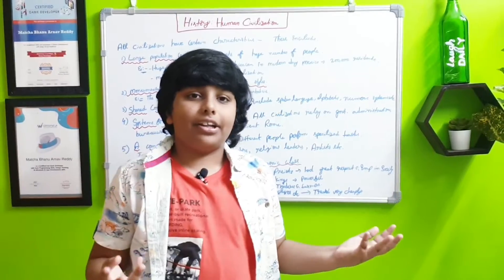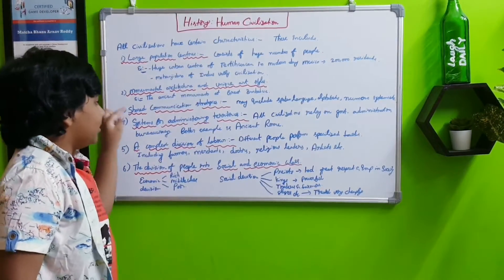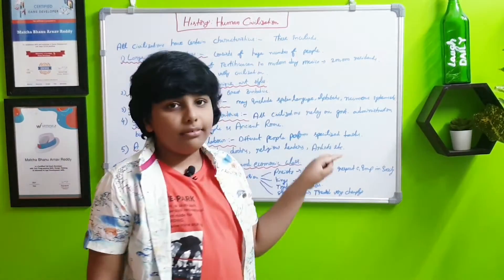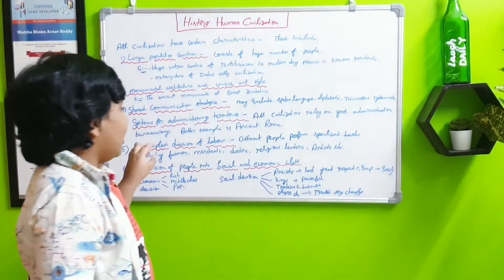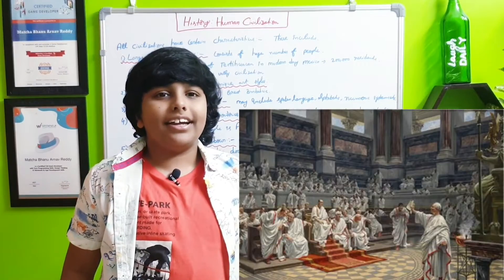Next, systems for administrating territories. All civilizations rely on the government, government administrative bureaucracy. Better example is ancient Rome. Even then they had a great government, very developed government.